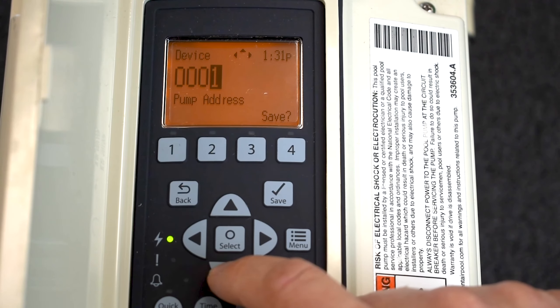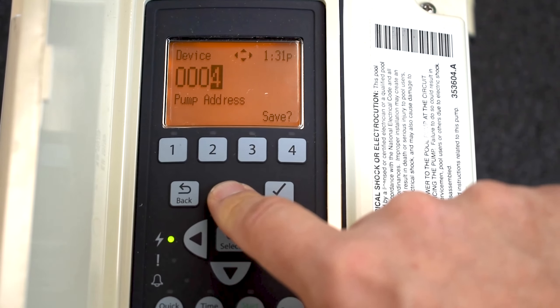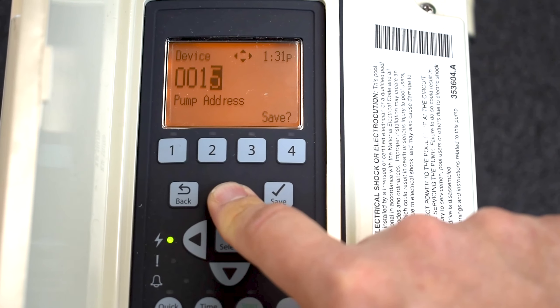So what I'm doing is the pump address and I can click select. Yeah, so I can go all the way up to I think 32 now.